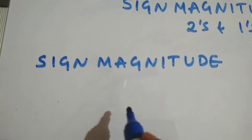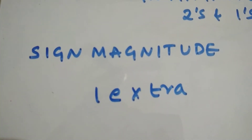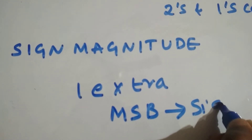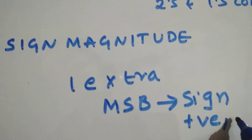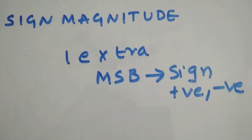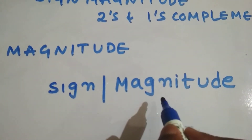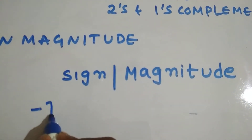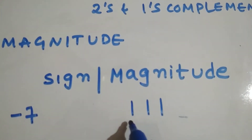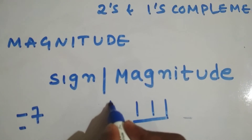In signed magnitude form, we have one extra bit added at the front of the binary number. This extra bit is the MSB bit, which indicates the sign — whether it's positive or negative. So let us clearly understand this: we have sign and magnitude. Let's take an example of minus 7. Minus 7 can be written in binary as 1, 1, 1 — this is the magnitude. Since it's negative, we add one extra bit: a 1, indicating negative sign.